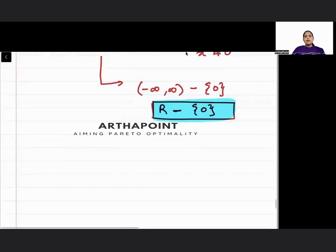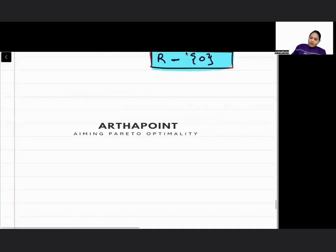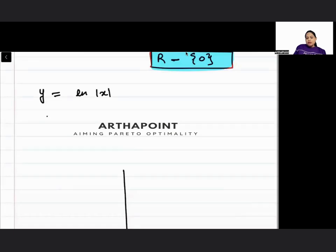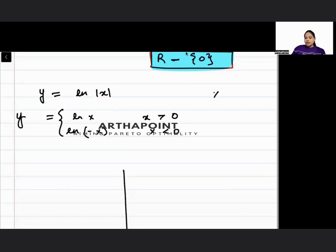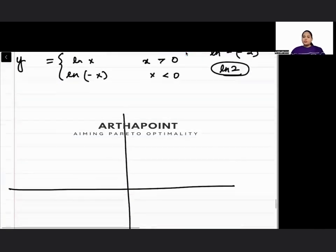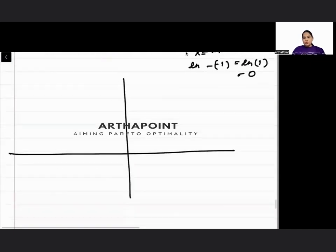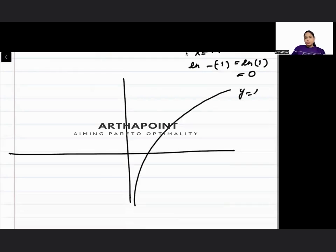What does this actually mean? If I were to draw y = ln|x|, this is going to be ln x for all x greater than 0, and ln(−x) for all x less than 0. So suppose I take x = −2; I will get ln(−(−2)) = ln 2. So whether I put x as minus 2 or plus 2, it gives me ln 2 — this is a mirror image. For all negative values, I get the same answers as for positive values.